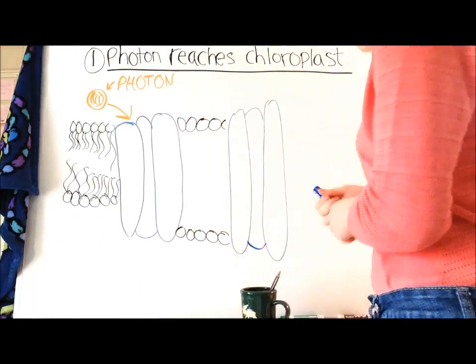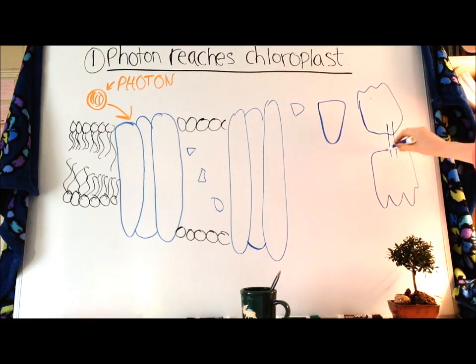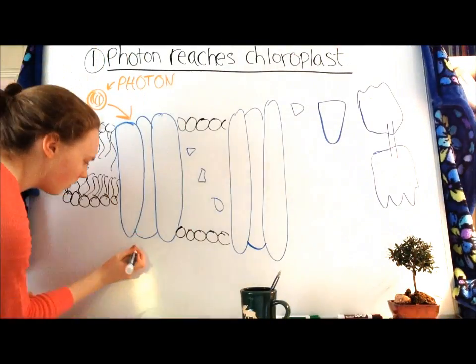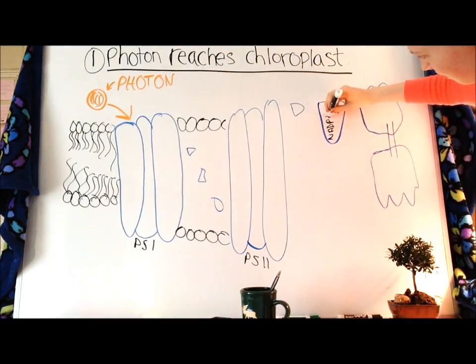The membrane is made up of phospholipids with their hydrophilic heads and hydrophobic tails. We have Photosystem I on the right and Photosystem II on the left, NADP-Reductase, which I'm labeling right now.